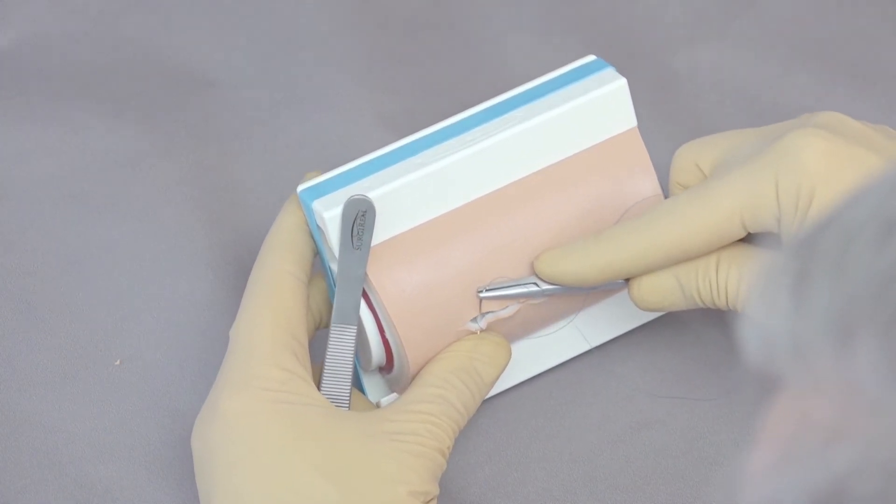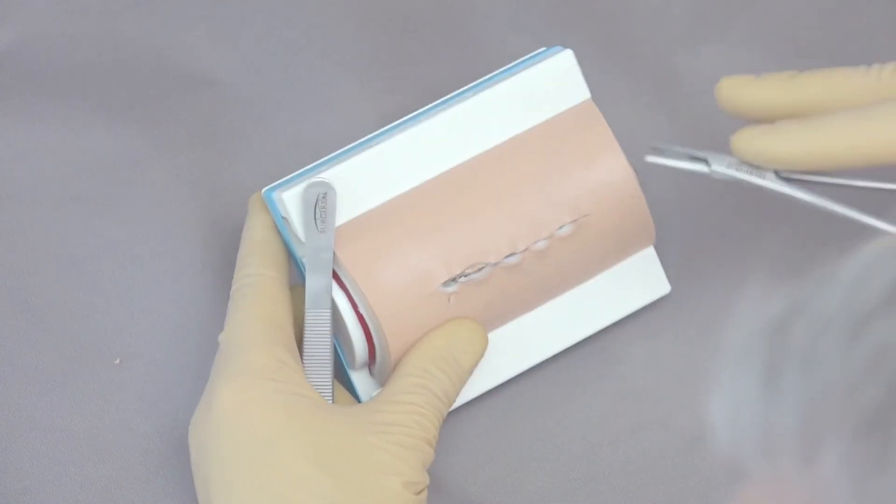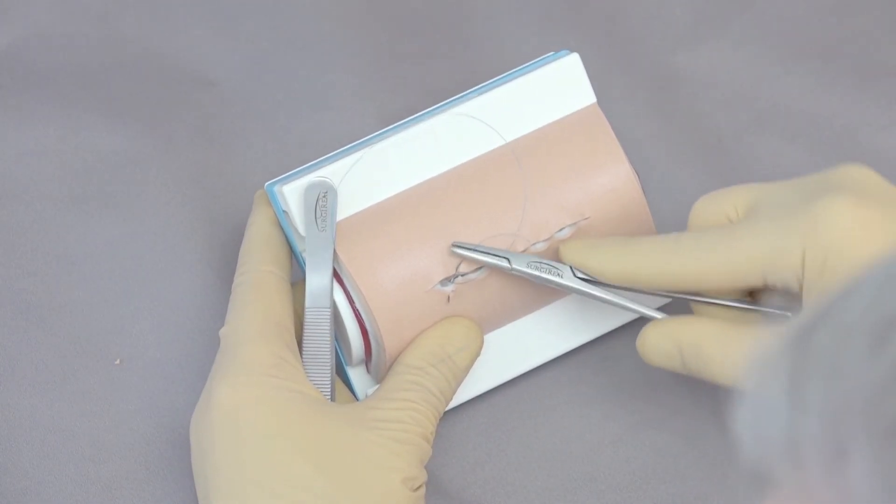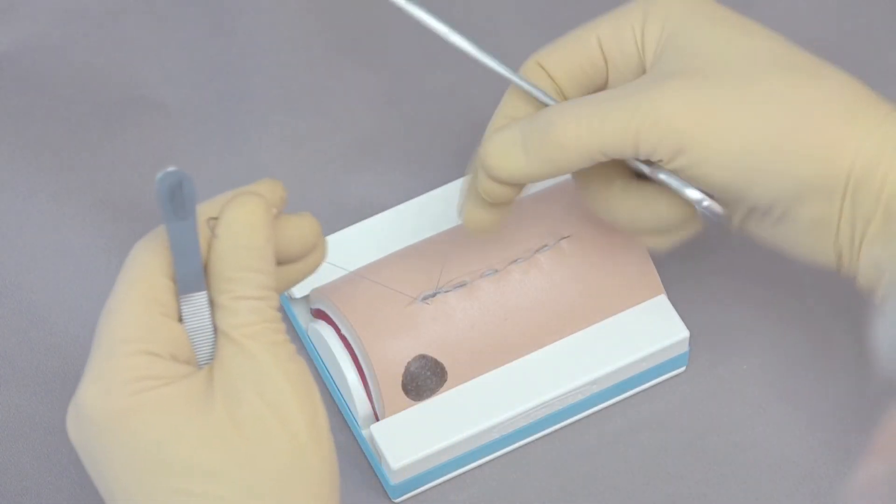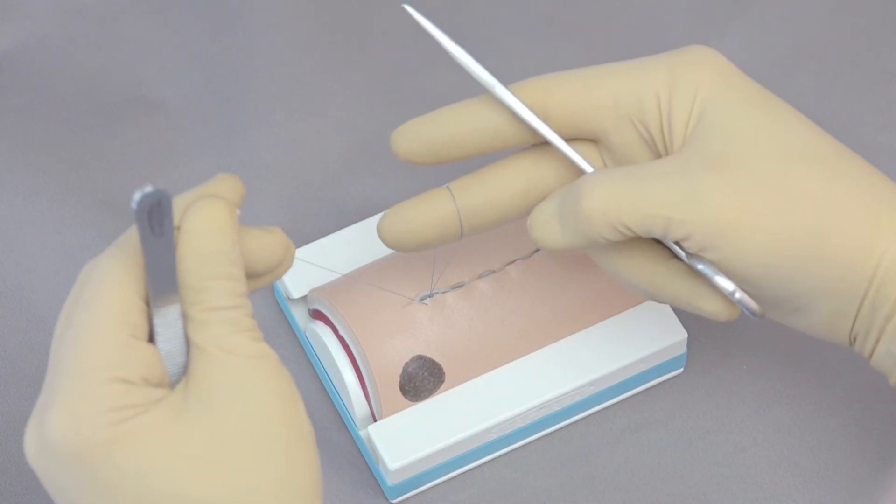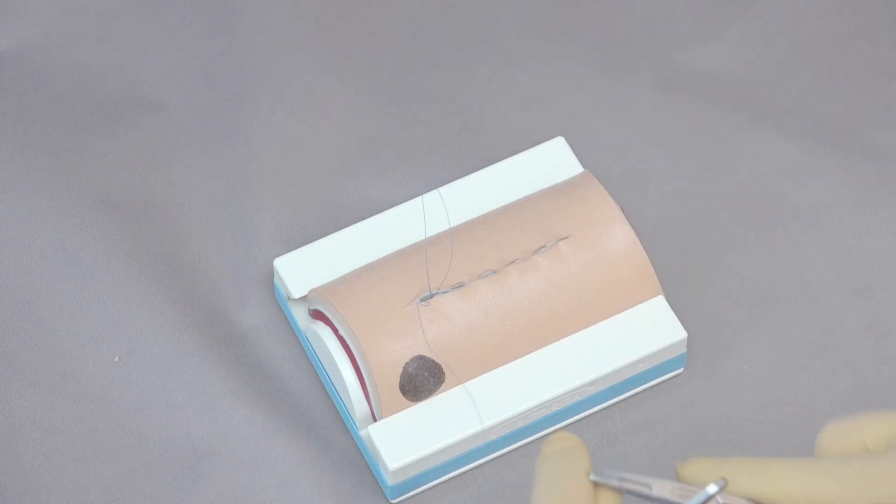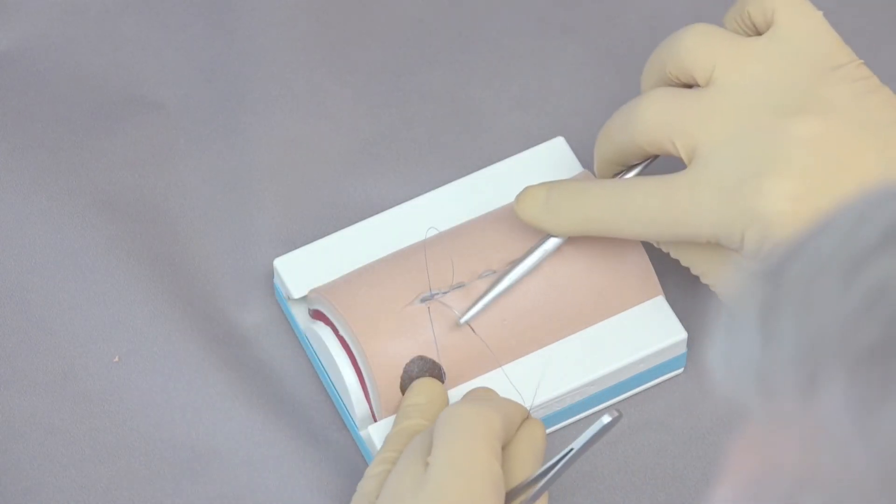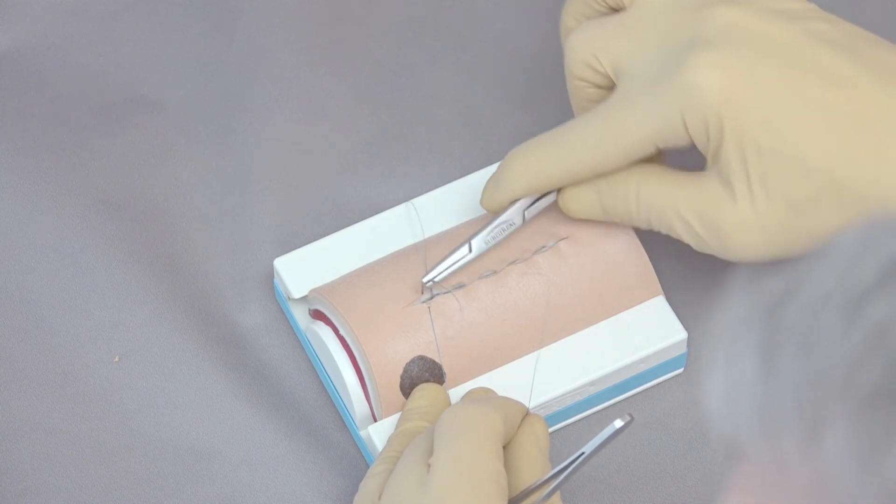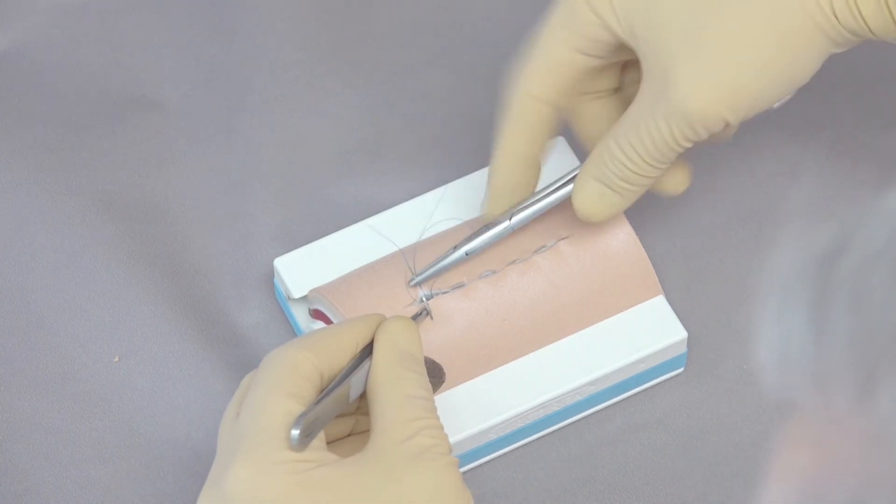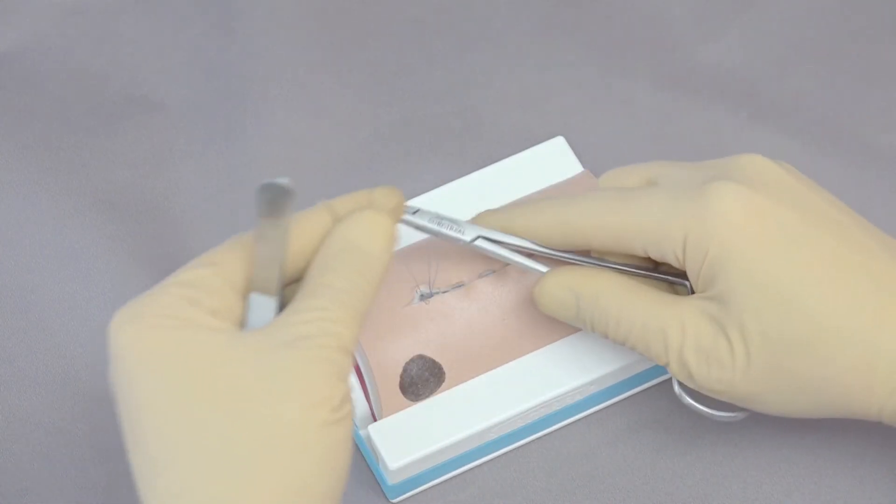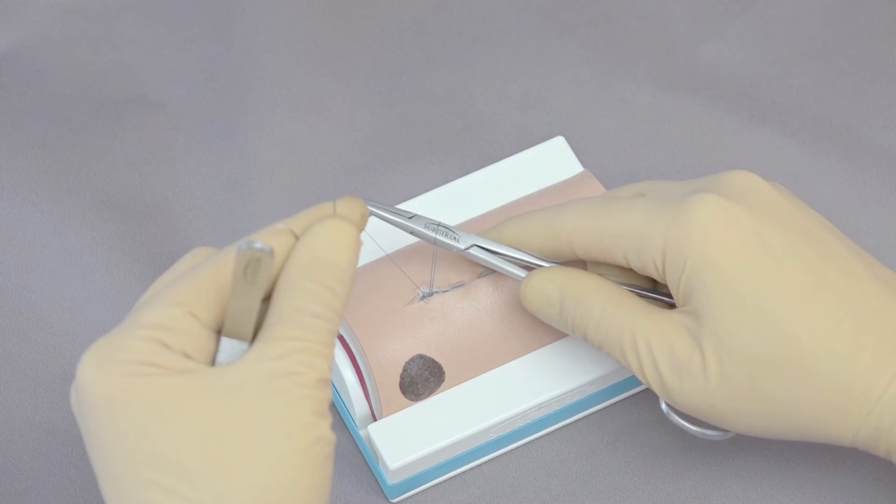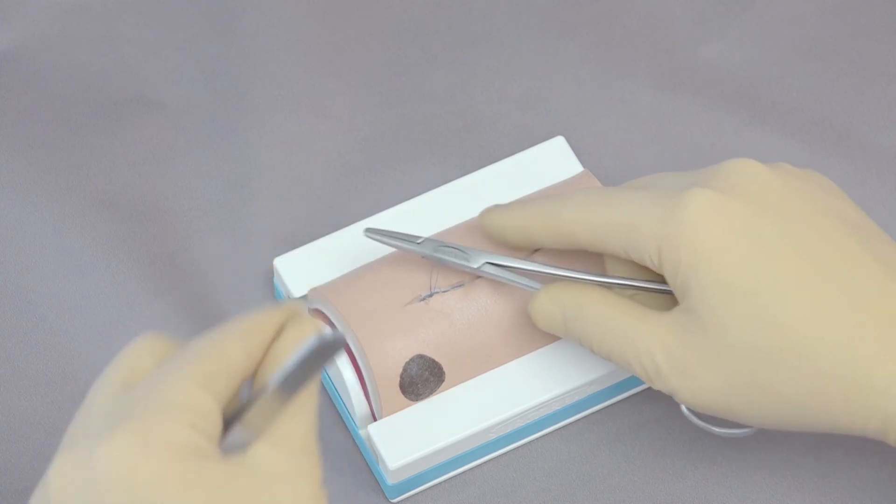Now we need to come from the bottom back to the superficial area again. Again working our way right to the junction of the dermis and epidermis. So now both of these are coming through the bottom, so we have to do that one more time with this end.